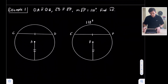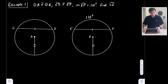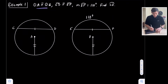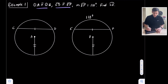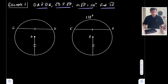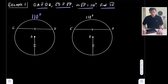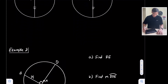Let's look at a couple of examples using these three theorems. Example one: we have two congruent circles, circle A and circle B. We're told the two circles are congruent and that the chords are congruent — CD is congruent to EF. The measure of minor arc EF is given, and we want to find minor arc CD. Since the circles are congruent and the chords are congruent, their minor arcs are also congruent, so arc CD is also 110 degrees.